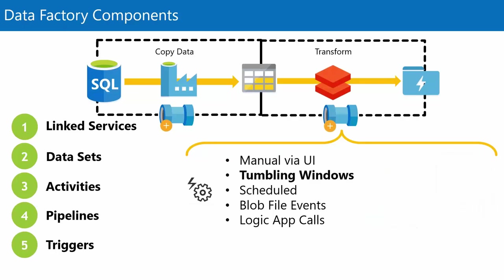The next trigger type is the tumbling window — renamed in version two from what used to be called time slices. The idea was that for all your datasets and activities, you'd define a timeline and carve it up into time slices, with each slice becoming one execution of the activities. It worked quite well in version one for time-series data. In version two it's not my trigger of choice, but it has use cases, and the name is now consistent with tumbling windows in Azure Stream Analytics.